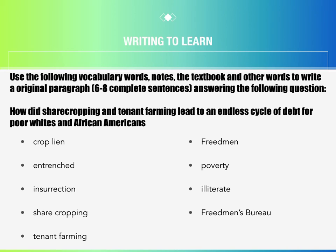Use the following vocabulary words, notes, the textbook, and other resources to write an original paragraph of six to eight complete sentences answering the following question: How did sharecropping and tenant farming lead to an endless cycle of debt for poor whites and African Americans? Your vocabulary words are listed below.